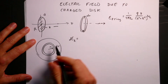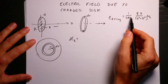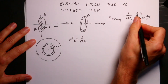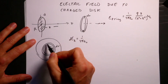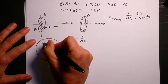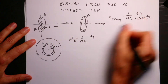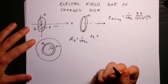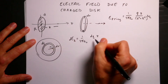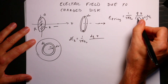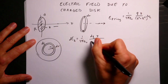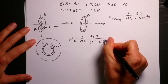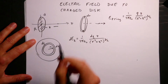The electric field due to this ring is just going to be a component in the Z direction. So I can write dE_z using this equation: it's 1 over 4π ε₀, times DQ — the charge on this ring — times Z, divided by r squared plus Z squared to the three halves. That's the component from one ring.